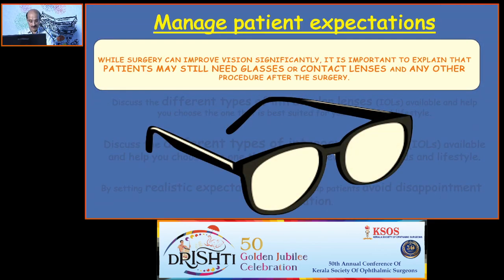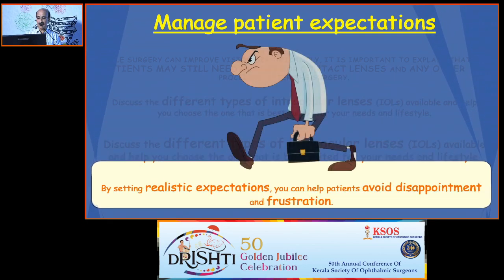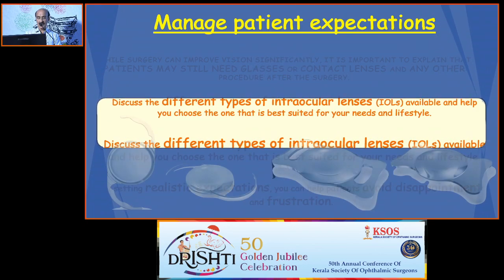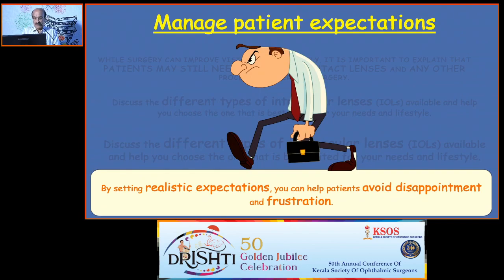Next, you have to manage patient expectations. While surgery can improve vision significantly, it is important to explain that patients may still need glasses or contact lenses and other procedures after surgery for better visual rehabilitation. Discuss the different types of intraocular lenses available and help them choose the one best suited for their daily needs and lifestyle activities. By setting realistic expectations, you can help patients avoid disappointment and frustration, making them ideal candidates for your surgical procedure.